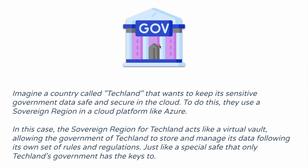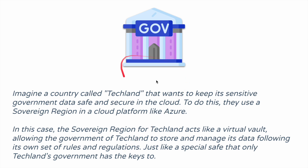If it's still difficult to understand this concept, here is an example. Imagine a country called Techland, which wants to keep its sensitive government data safe and secure in the cloud. To do this, they use a sovereign region in a cloud platform like Azure. The sovereign region for Techland acts like a virtual vault, allowing the government to store and manage its data following its own set of rules and regulations. The country can decide what rules and regulations they want to put on this vault, and Azure will do it for them. It's like a special safe that only the government has the keys to, so this particular data center won't be accessible or available to any other party but the country.